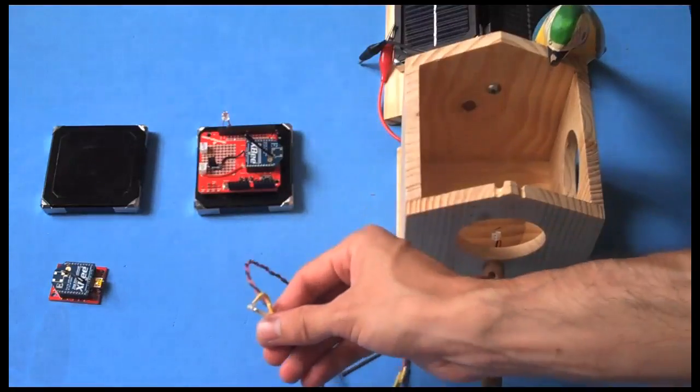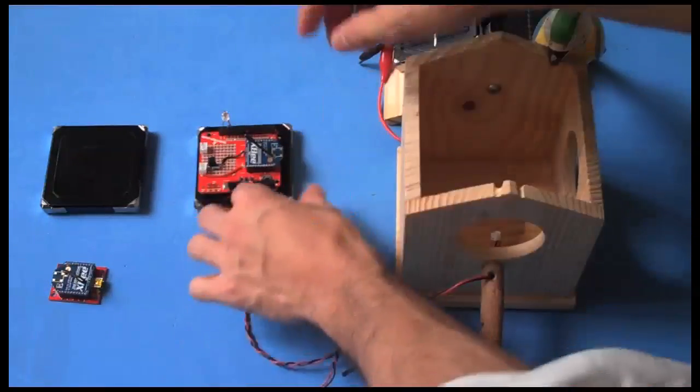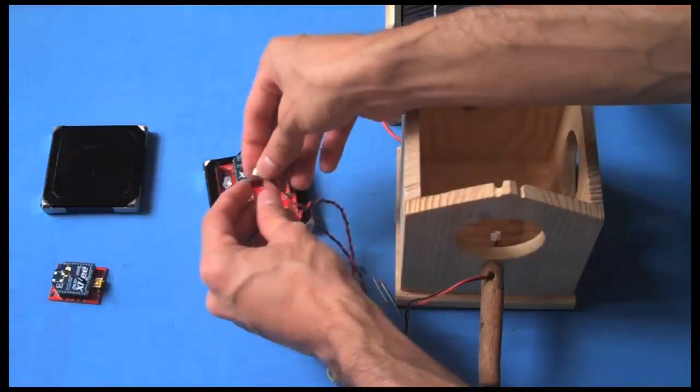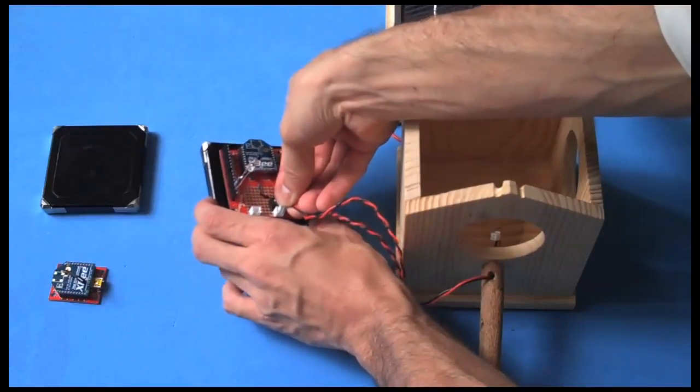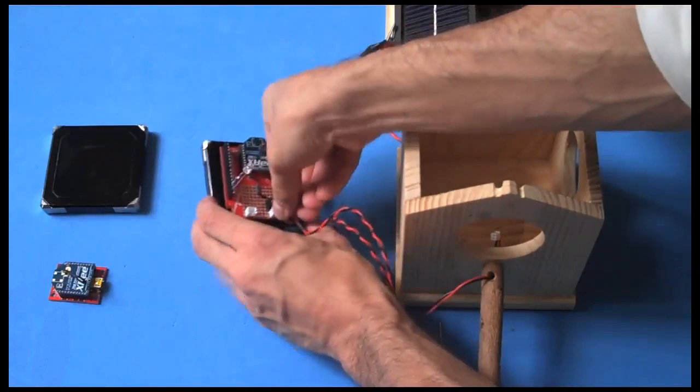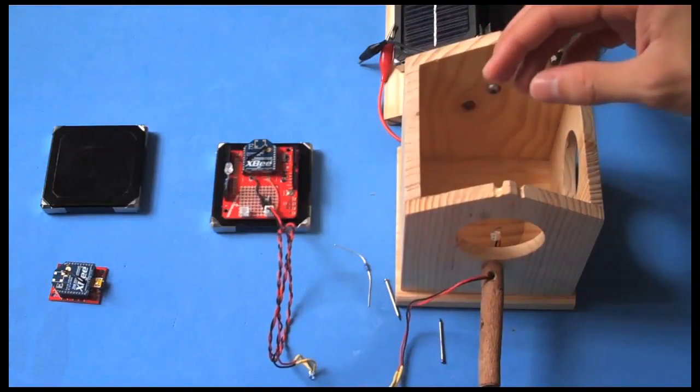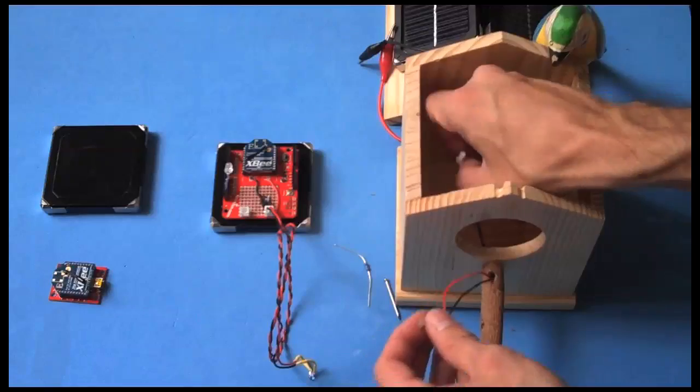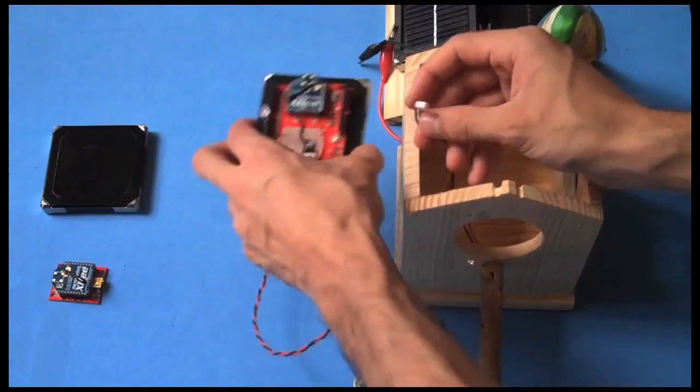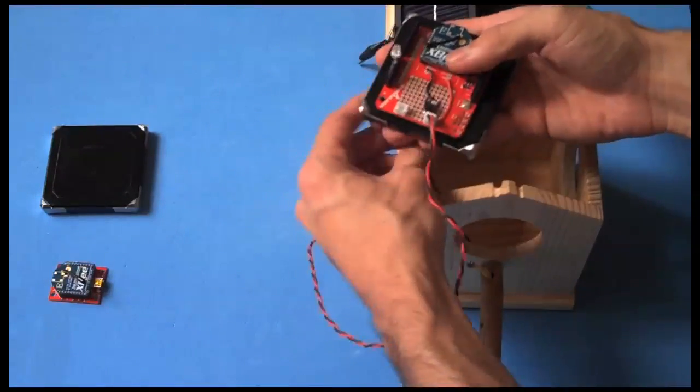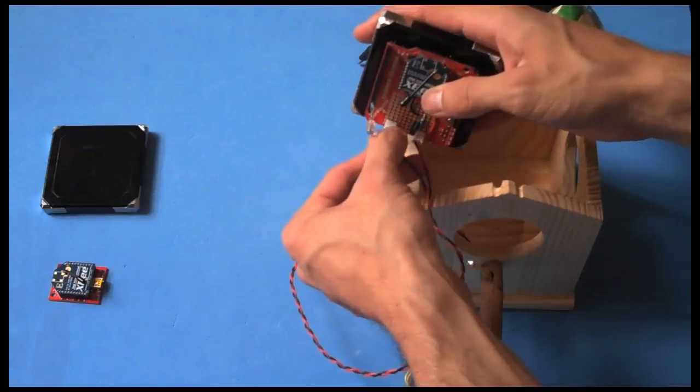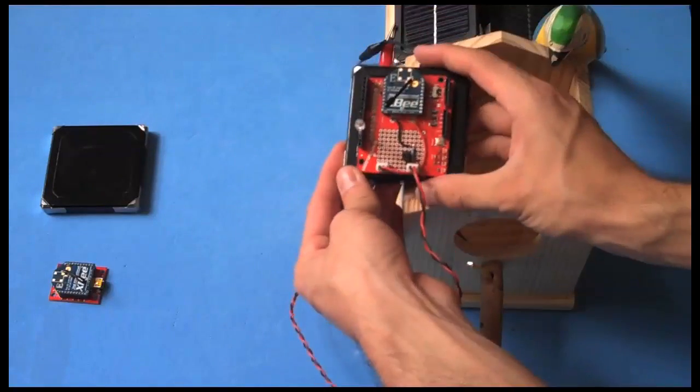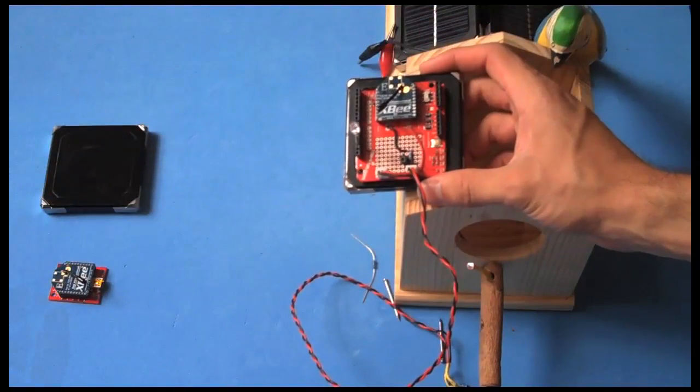And you will take your LED, plug that in to the right location. We will post this circuit online. You take your photo resistor, the other end of that, and you connect that as well. There you go. And now basically you're ready to go.